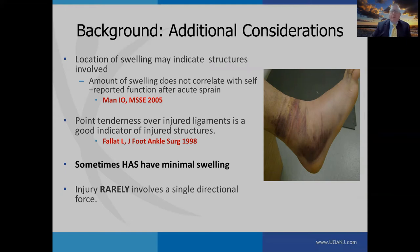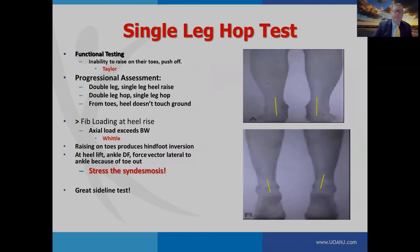This ankle sprain looks really bad, yet this athlete at three days walked into the athletic training room with a minimal limp. Point tenderness over an injured ligament is a good indicator of injured structures, but keep in mind that high ankle sprains may have minimal swelling.